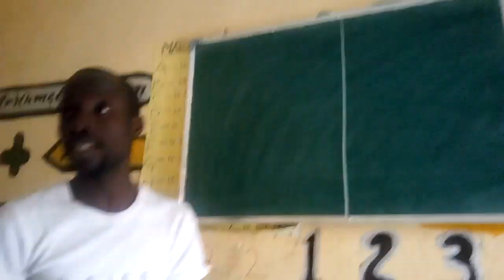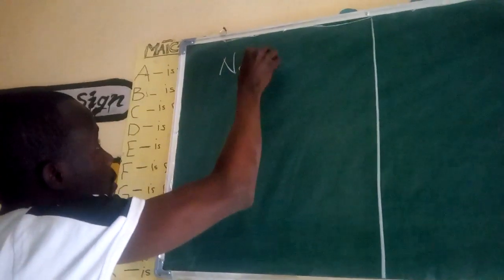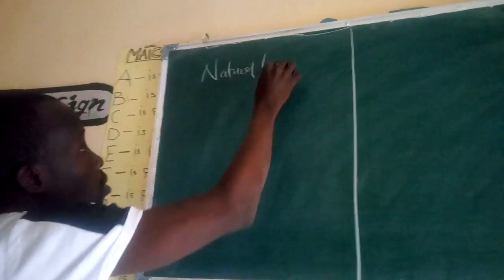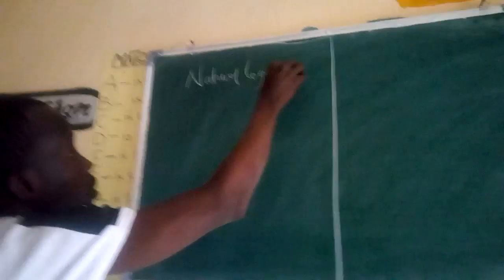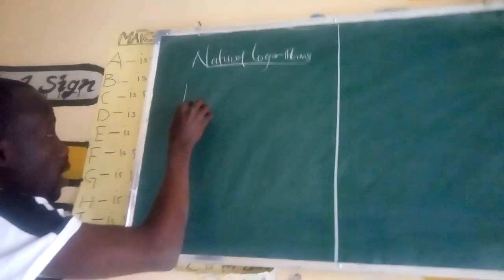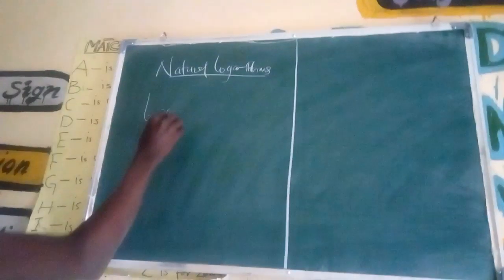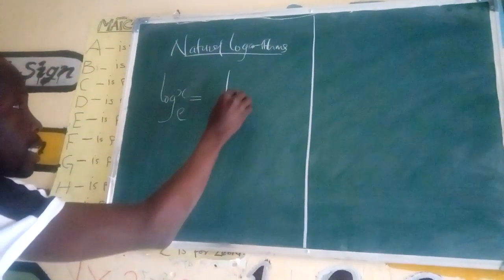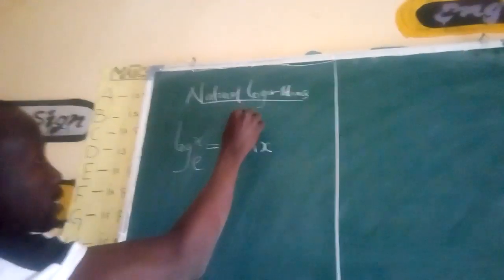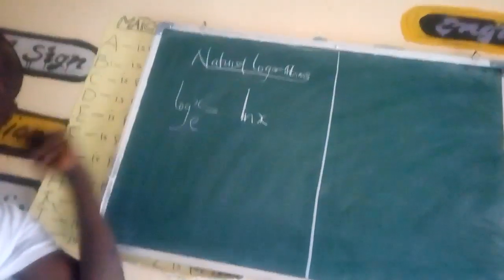We are covering Natural Logarithm. Natural Logarithm is called log of x base e, written as log x base e. Log x base e is the same as ln x.